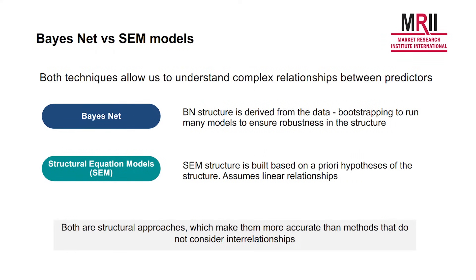There are two approaches that are commonly used. The first is something called BayesNet or Bayesian network analysis. This is a relatively new approach which uses the data in the same way as the other key drivers models to create a structure and measure the strength of relationships. There's also an older approach — structural equation modeling, or SEM — which does a similar thing, but it's basically built on prior hypotheses about the structure that exists.